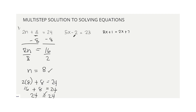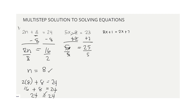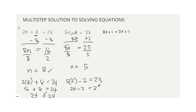Number 2: 5x minus 2 equals 23. Add positive 2 to both sides — negative 2 plus 2 is 0 — giving 5x equals 25. Then divide both sides by 5: x equals 25 divided by 5, which is 5. To check: 5 times 5 is 25, minus 2 equals 23 — and 23 equals 23. Therefore, x equals 5 is correct.